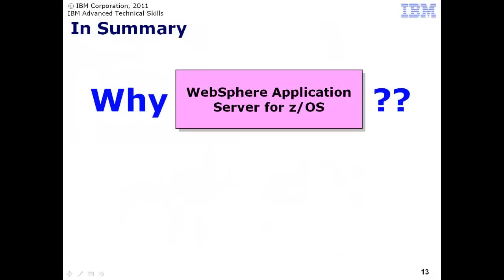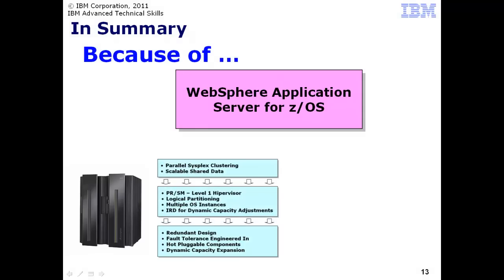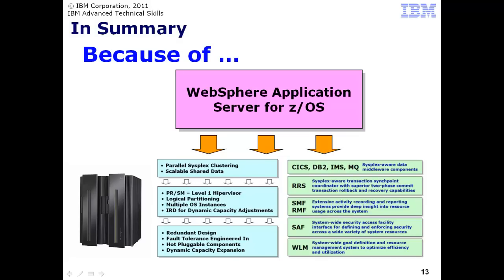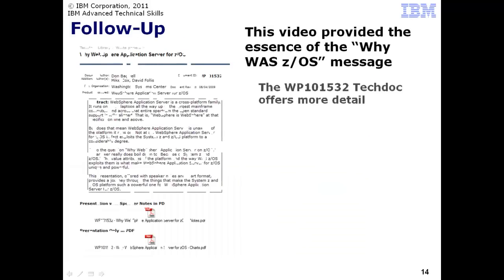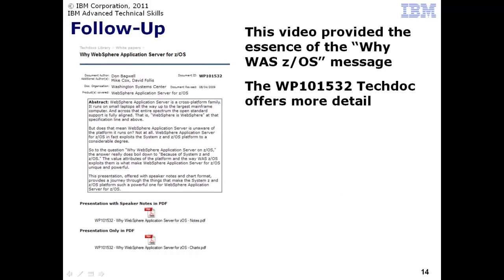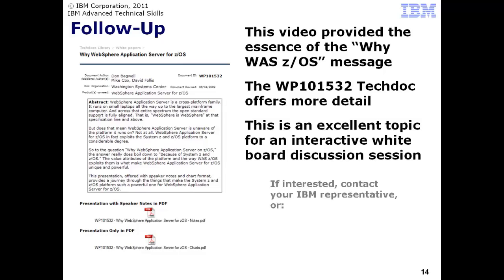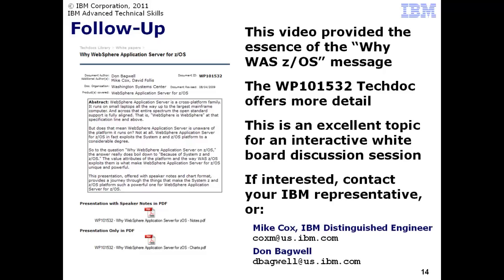In summary, why WAS-ZOS? Because of System Z and ZOS and the exploitation of both by WebSphere Application Server for ZOS. The WP101532 document at IBM.com/support/techdocs provides more comprehensive treatment of the subject. This is an excellent topic for an interactive whiteboard session on pros, cons, and other architectural considerations. If you're interested in taking this discussion to the next level, contact your local IBM representative. Thank you for watching this video and thank you for considering WAS on ZOS.